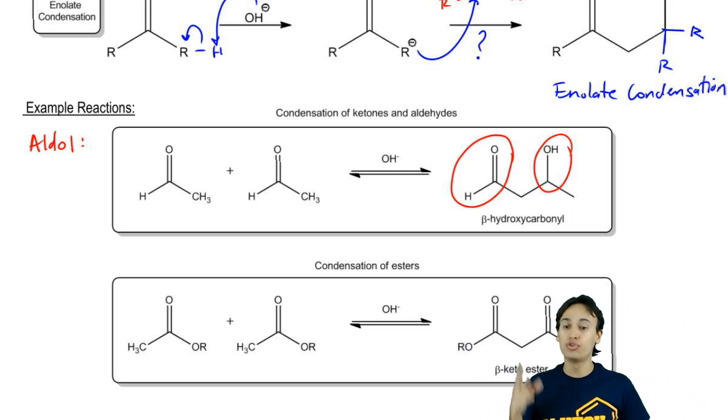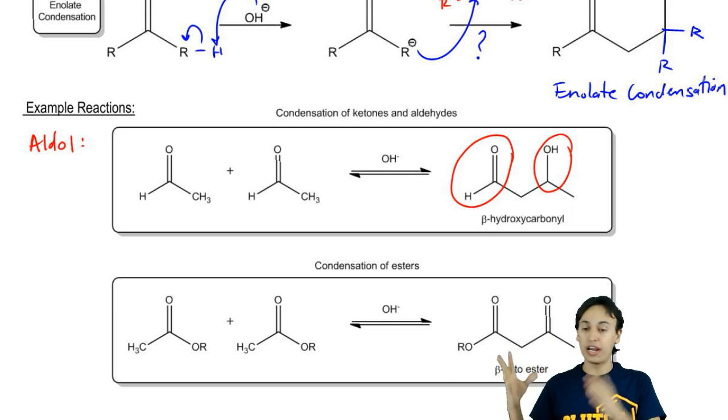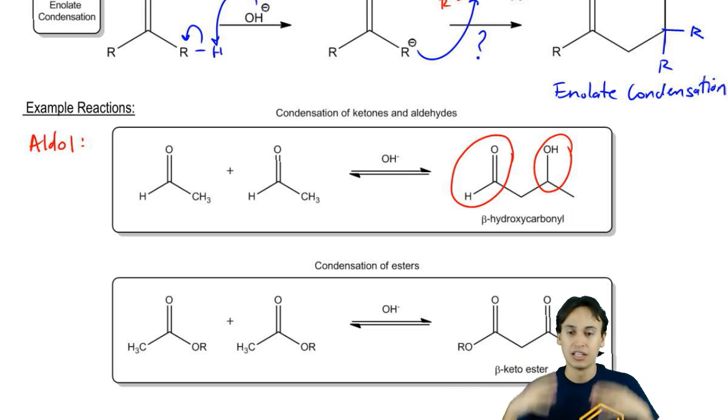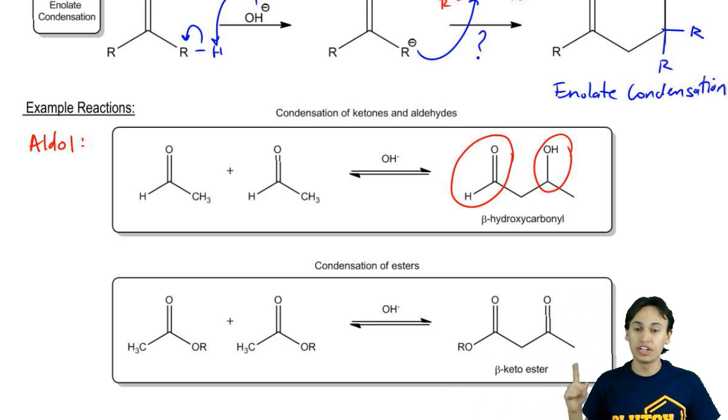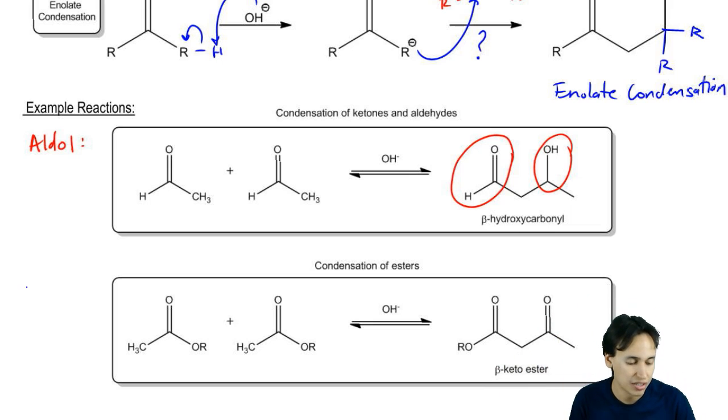Another example. What if we do this with two esters? We take two esters. We make an enolate. They react with each other. They're going to make a beta-dicarbonyl, specifically a beta-ketoester. This reaction is called a Claisen condensation.